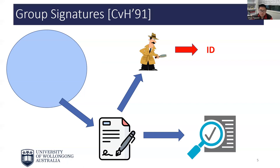On the one hand, we have ring signatures and variants that give too much privilege to users. On the other hand, we have group signatures and variants that provide too much power to the authorities. Finding a solution that is reasonably fair for both users and authorities — a solution that balances privacy and accountability — was a challenging problem for a long time.